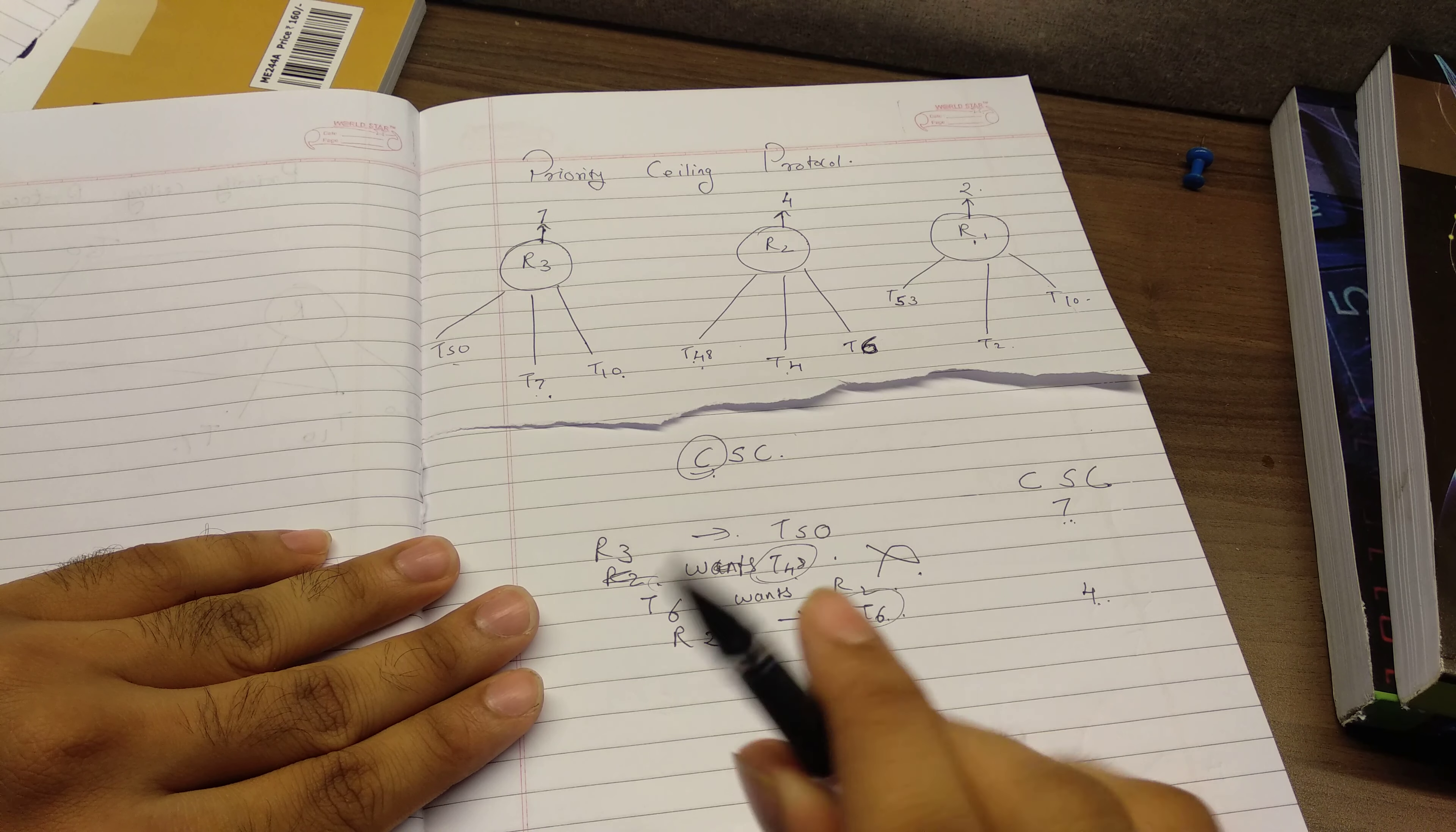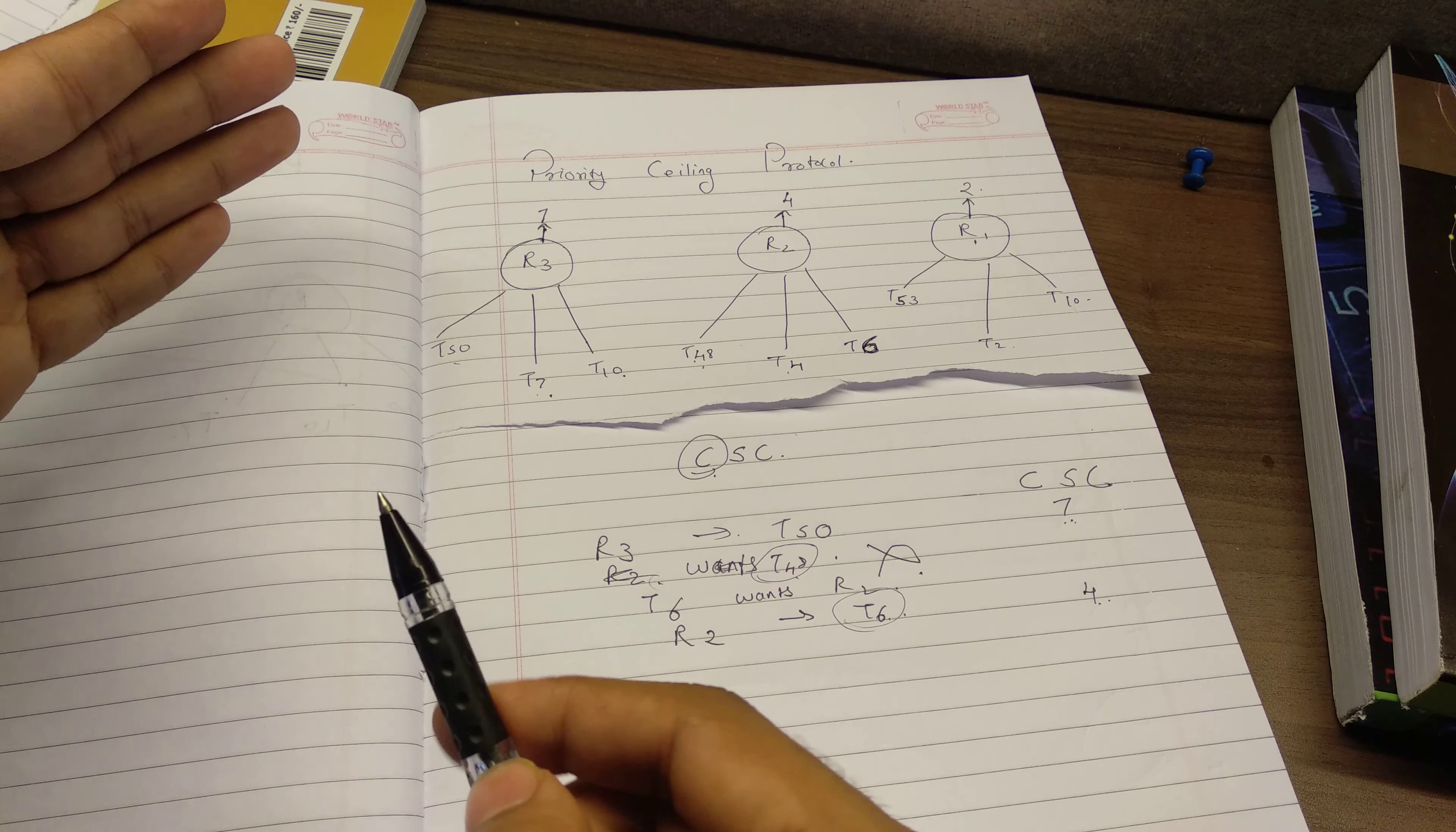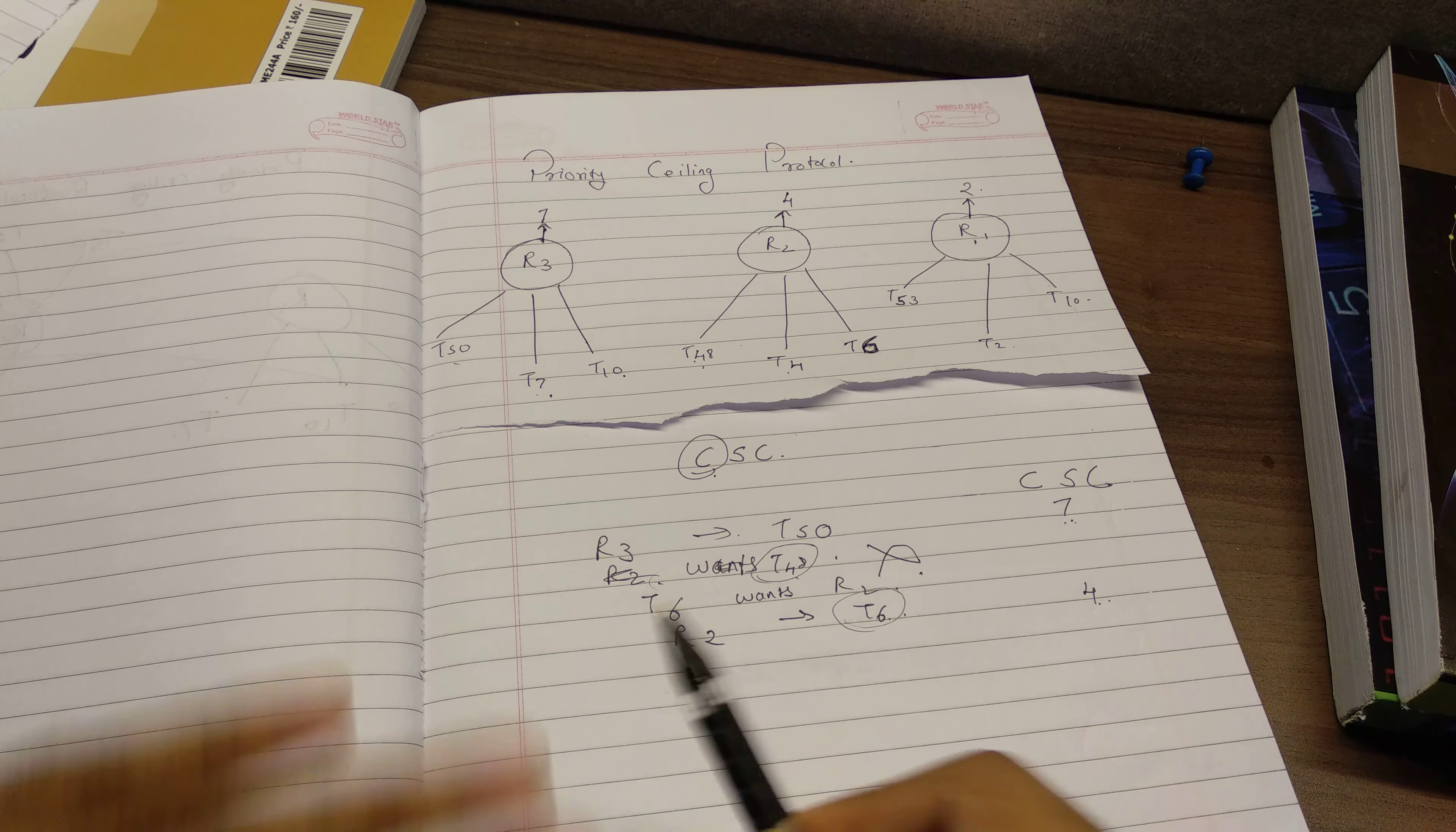Now we move on to an example wherein how this effect, like how priority ceiling protocol actually helps in avoidance of deadlock.